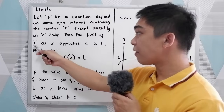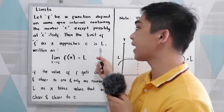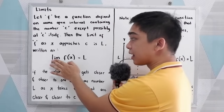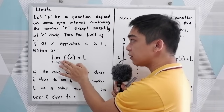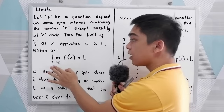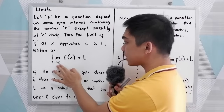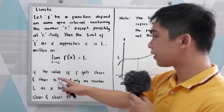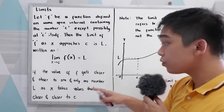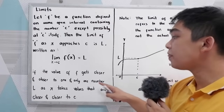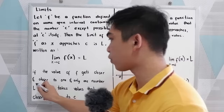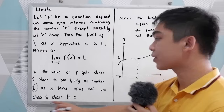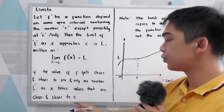The limit of f as x approaches c is L, written as: the limit of our function, say f(x), as x approaches c, is equal to L — if the value of the function gets closer and closer to one and only one number, which is our L, as x takes values that are closer and closer to c.